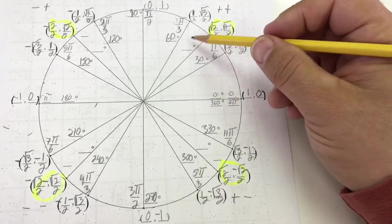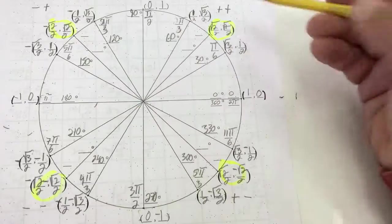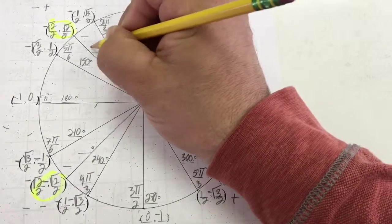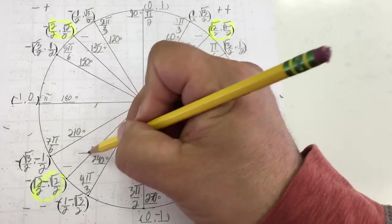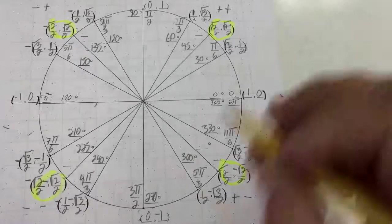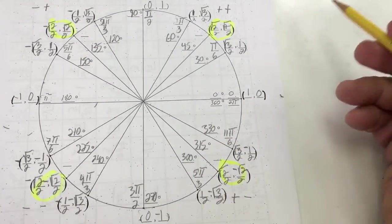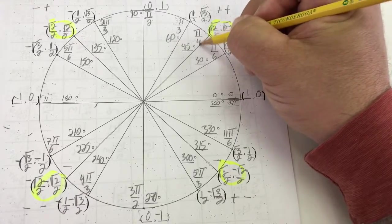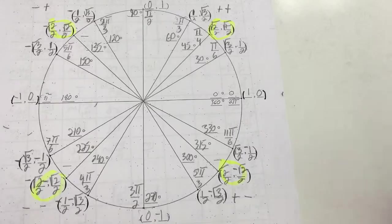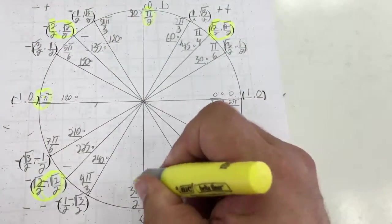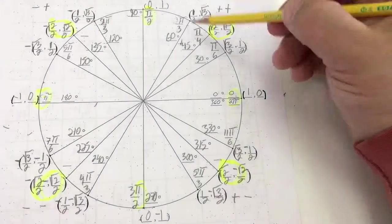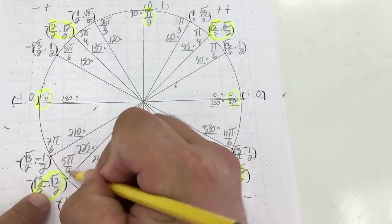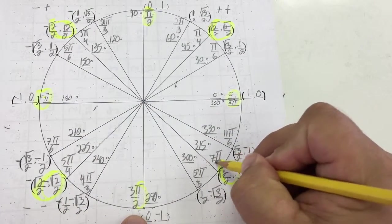Now I'm going to do the last degrees where I skipped and the last radians where I skipped. To get this degree, I add 15 — so that's 45 degrees. I add 15 here — that gives me 135 degrees. I add 15 degrees here — that gives me 225 degrees. I add 15 degrees there — and that gives me 315 degrees. Now to get this radian, this is a clue — that's going to be pi over 4. Now I'm going to count in increments of pi over 4: 1 pi over 4, 2 pi over 4 — already simplified. 3 pi over 4, 4 pi over 4 — already simplified. 5 pi over 4, 6 pi over 4 — already simplified. 7 pi over 4. And that's it for the unit circle.